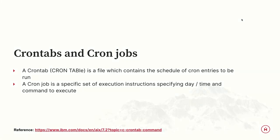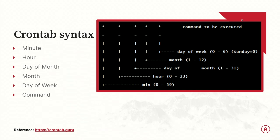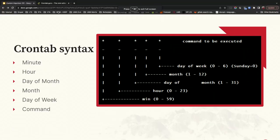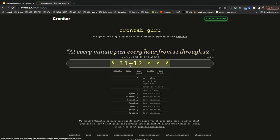How to schedule: cron jobs and crontabs. A crontab is a file that contains a schedule of cron entries — cron jobs with a specific set of execution instructions specifying when and what to execute. The syntax has fields for minute, hour, day of the month, month, day of the week, and then the command. I have a handy reference: crontab.guru — it's pretty sweet if you've never seen it.